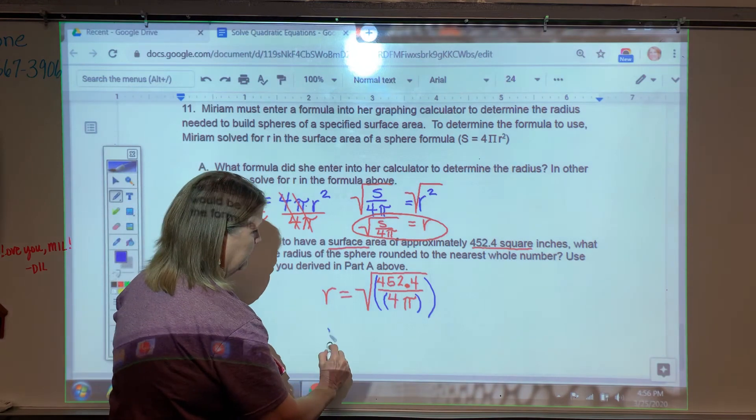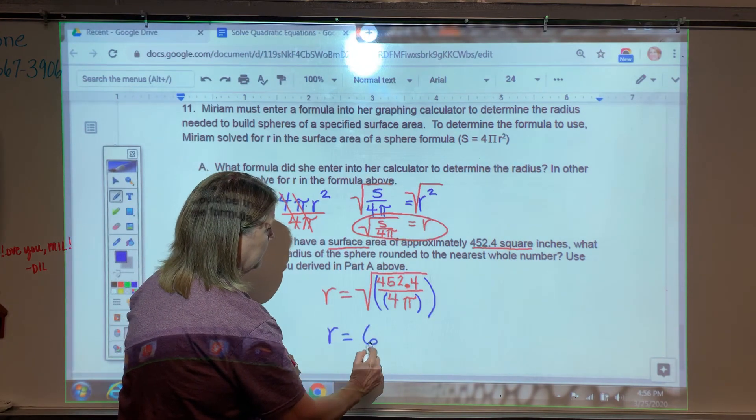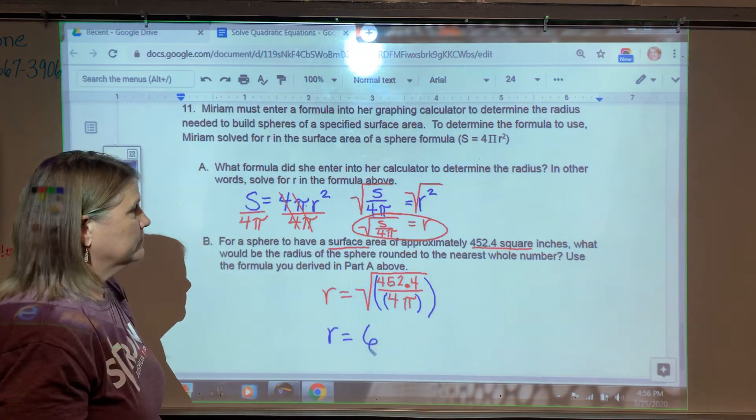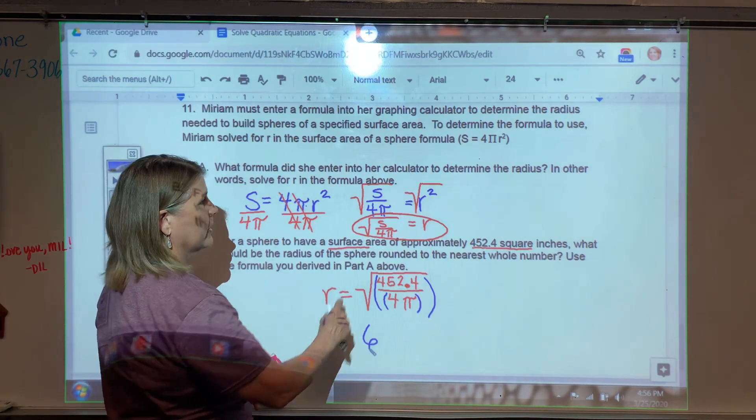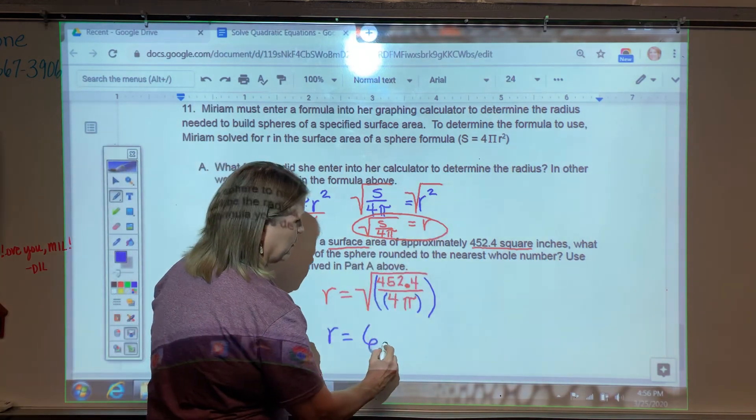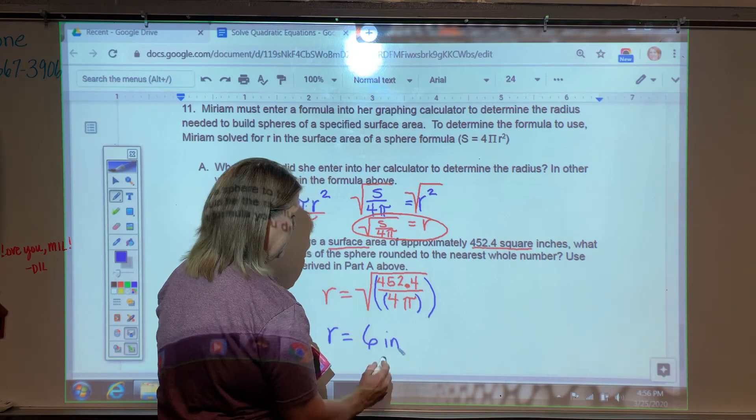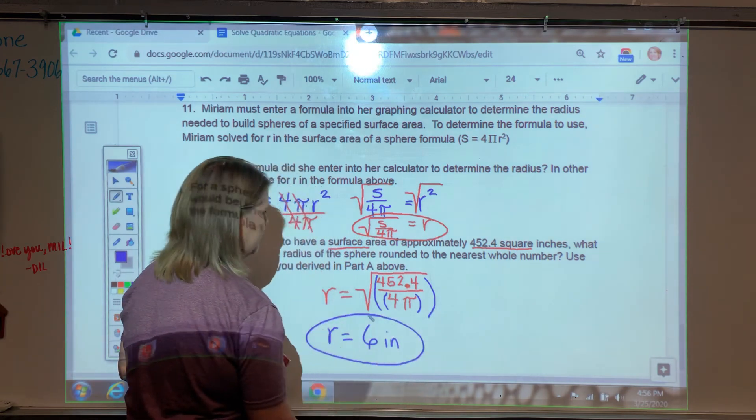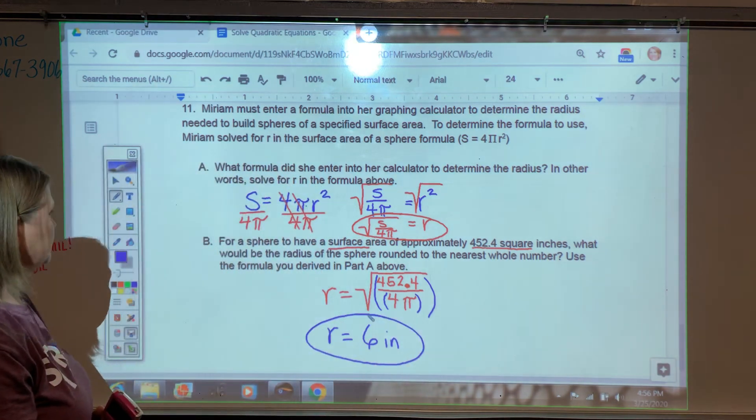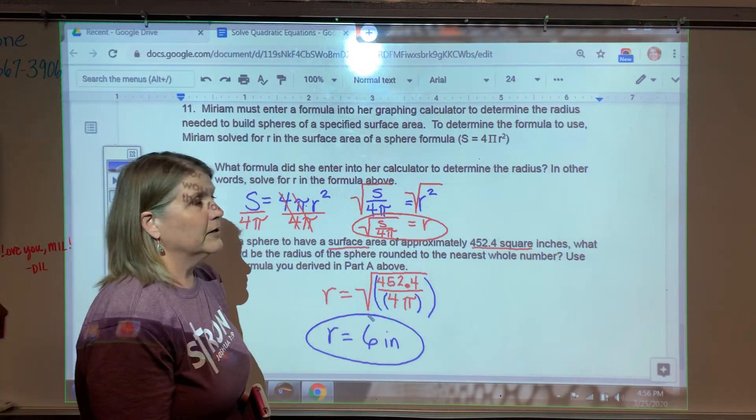And so if I round it, that's 6. I do need a unit, though. So if my area is in square inches, I know that my single unit here is 6 inches. The radius would be about 6 inches. Okay. So I'm going to go ahead and submit that video.